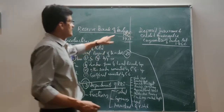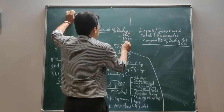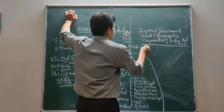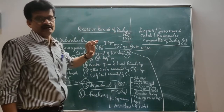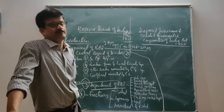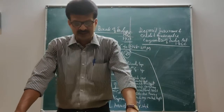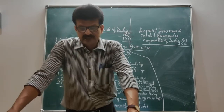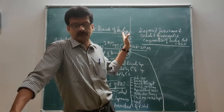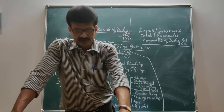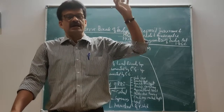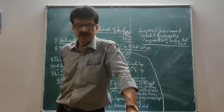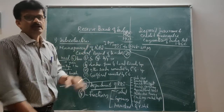The Reserve Bank of India functioned as a private shareholder-controlled bank from 1935 to 31st March 1948, but from 1st January 1949 onwards, after nationalization, it started to be a bank controlled and owned by the government of India. Today the Reserve Bank of India functions as a government-owned, state-owned, and state-controlled bank.